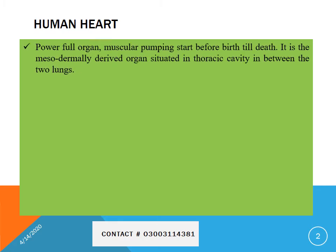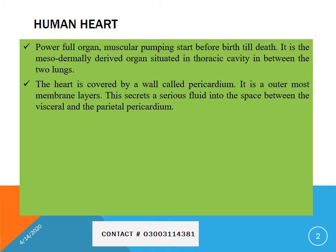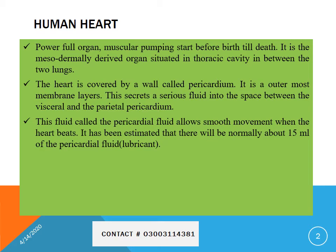Heart is a powerful organ. It is a muscular pumping organ that starts before birth till death. It is a mesodermally originated organ, located in the thoracic cavity, in the ribcage between the two lungs. Heart is covered by a wall called the pericardium, which is the outermost membrane layer. It secretes serous fluid into the space between the visceral and the parietal pericardium. This fluid is known as pericardial fluid, which works like a lubricant and protects from friction during heartbeat. About 15 ml of pericardial fluid is present.